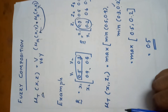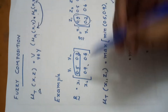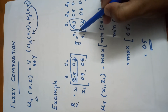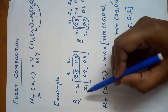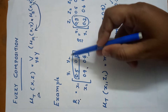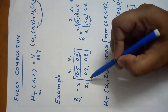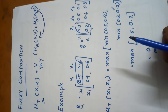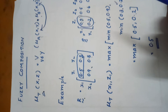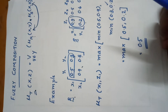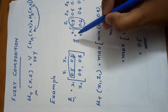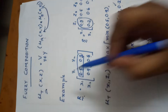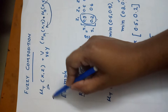Let's see an example. Here R is a fuzzy set and S is another fuzzy set. These are the elements of the first set and these are the elements of the second set. We need to find the fuzzy composition of R and S. Here we know the equation.